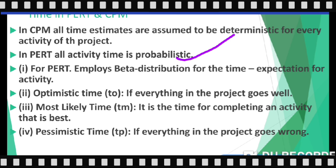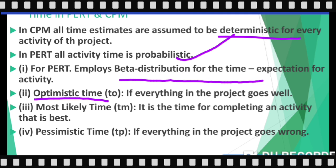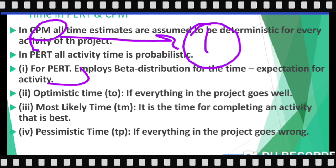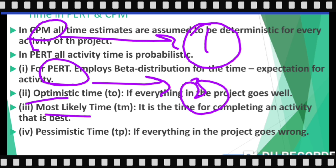In CPM, time estimates are deterministic, while in PERT all activity time is probabilistic. PERT employs beta distribution for time expectation for activities and has three time estimates: optimistic time, most likely time, and pessimistic time. In CPM we have only one time estimate, but for PERT we have these three time estimates.